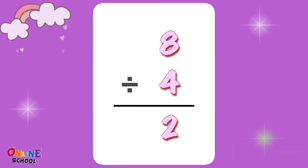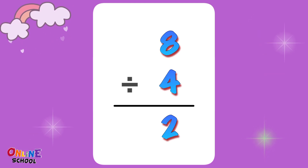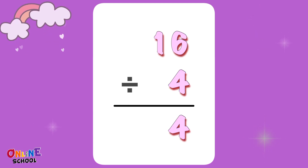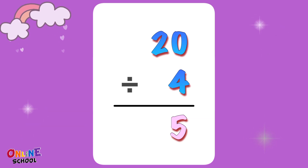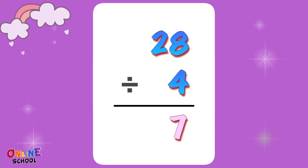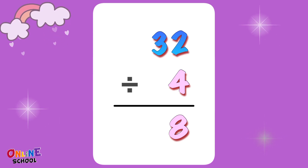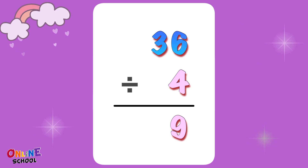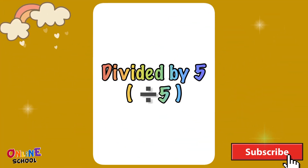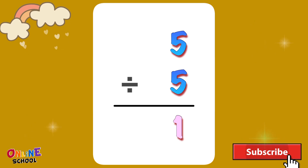Divided by 4. 4 divided by 4 equals 1. 8 divided by 4 equals 2. 12 divided by 4 equals 3. 16 divided by 4 equals 4. 20 divided by 4 equals 5. 24 divided by 4 equals 6. 28 divided by 4 equals 7. 32 divided by 4 equals 8. 36 divided by 4 equals 9. 40 divided by 4 equals 10.